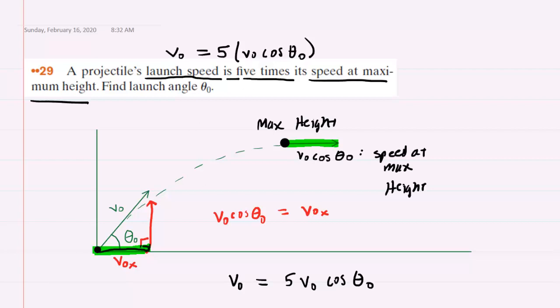Notice by the way if your question has something other than five times you would simply replace the number given to you in your question with this five right here. So if it was like 3.6 times then you would fill in 3.6 instead of five.